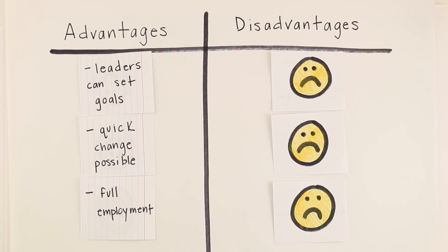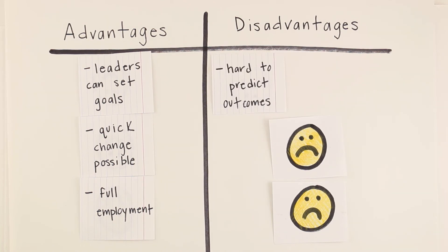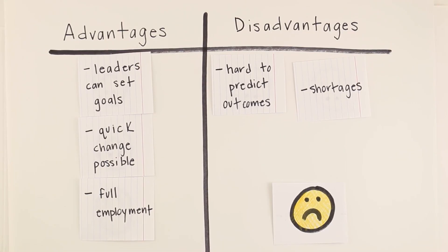A disadvantage of this system is that economic outcomes and opportunity costs are hard to predict. The system does not always meet consumer needs, and there can be shortages of goods.